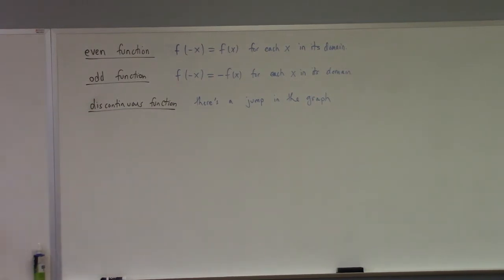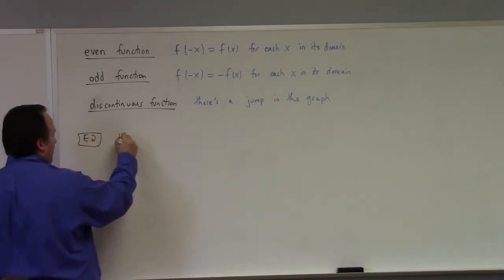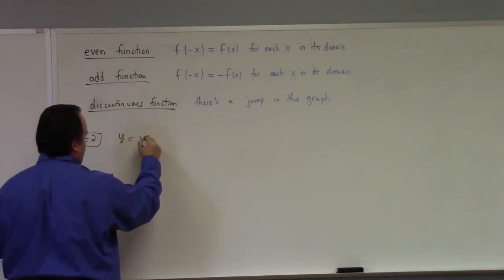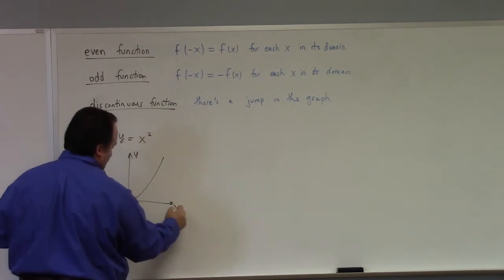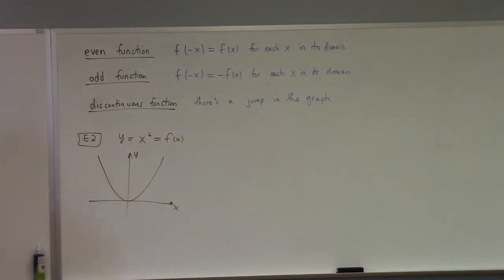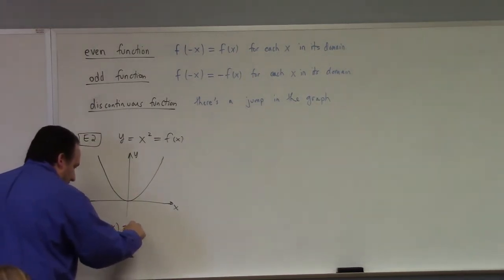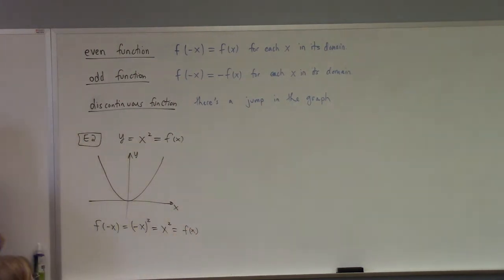Example two: y equals x squared. That's the parabola. So f of x equals x squared. Is this even or odd? It's even, right? If we look at f of negative x, we get negative x quantity squared, which equals x squared, which equals f of x. Because squaring a negative makes it go away, we get f of negative x equals f of x for every x. So this is an even function.